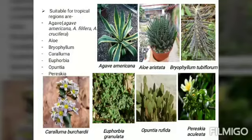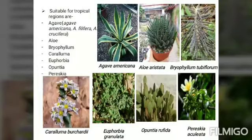The next tropical succulent is aloe. Aloe belongs to the family Liliaceae and forms a good pot plant. The important species include Aloe aristata, Aloe saponaria, and Aloe vera. A picture example has been provided.